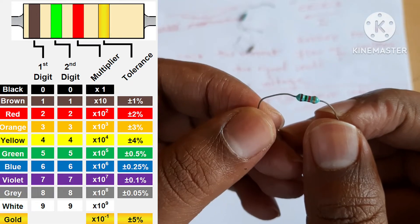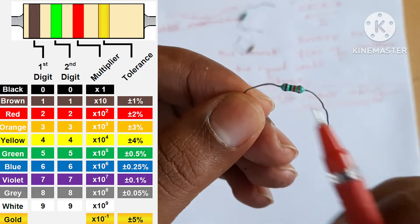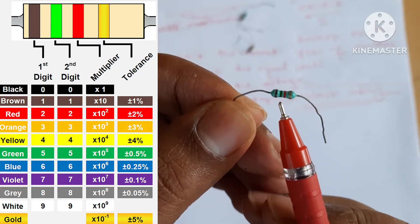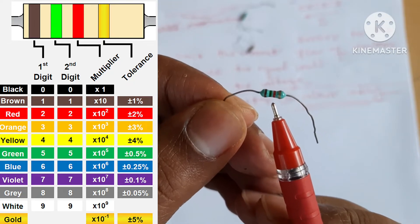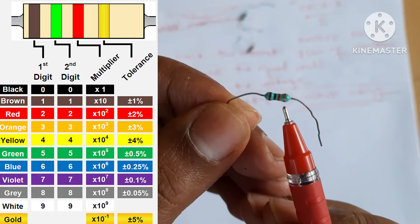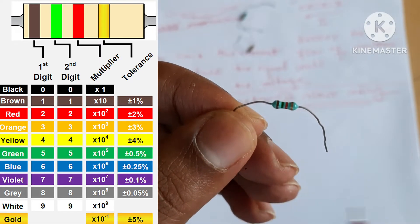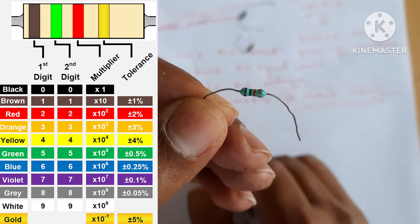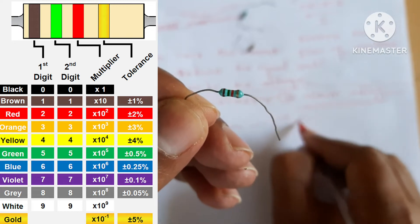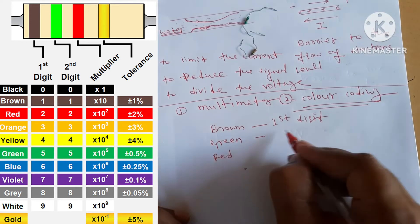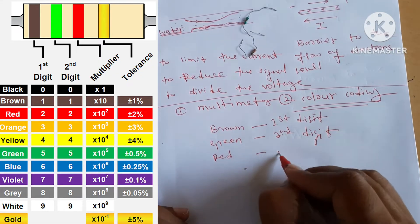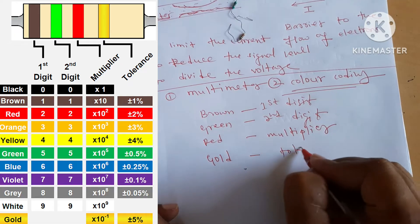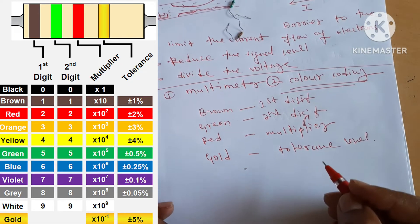On this resistor, the first band is brown, the second is green, the next is red, and there is a gold color band. Using color coding, we can read these bands. The second band gives the second digit, the next band is the multiplier, and the gold band is the tolerance level.